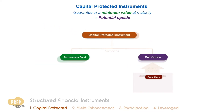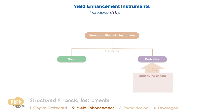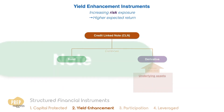Another category of structured financial instruments is yield enhancement instruments. Yield enhancement refers to increasing risk exposure in the hope of realizing a higher expected return. A credit-linked note is an example of a yield enhancement instrument. Purchasing a CLN can be viewed as buying a note and simultaneously selling a derivative known as a credit default swap.